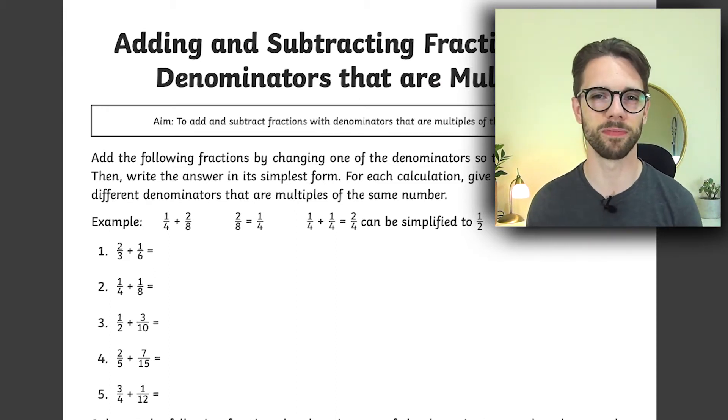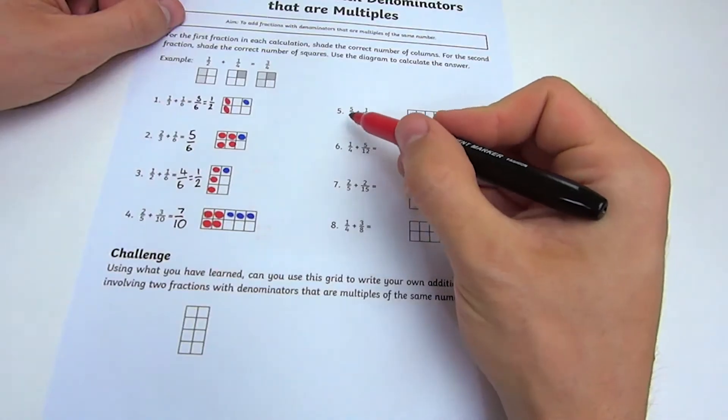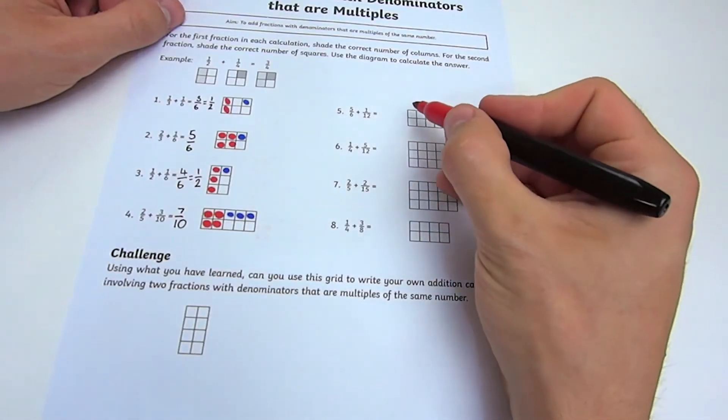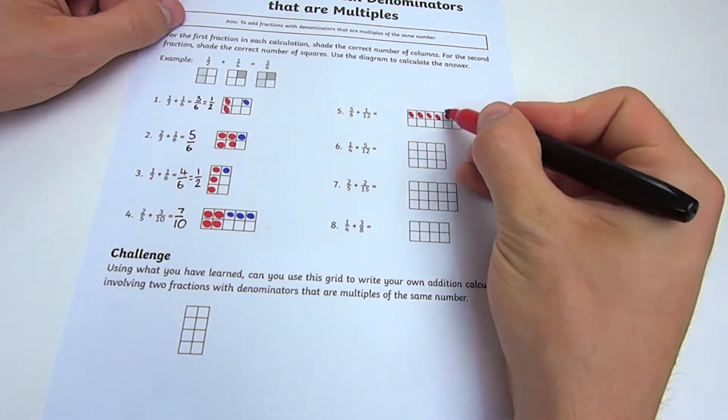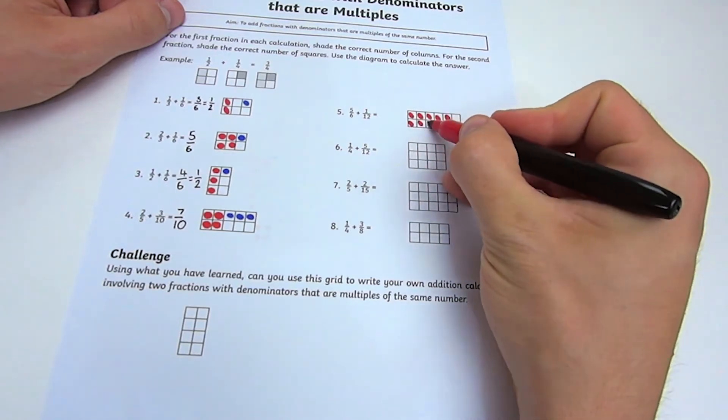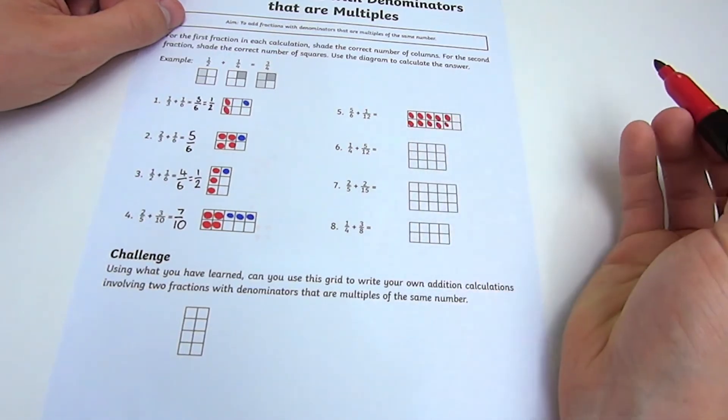The lower ability sheets can be completed by counting and coloring the provided grids. Like this: 5/6 add 1/12. So I could count 1, 2, 3, 4, 5, 6, then 1, 2, 3, 4, 5, 6.